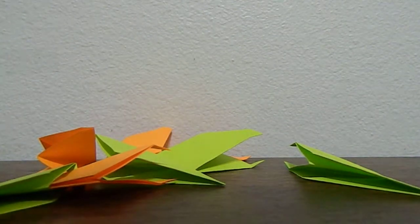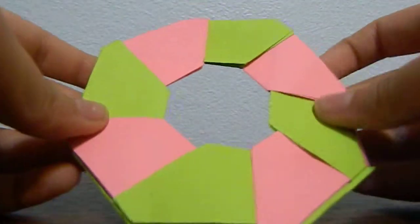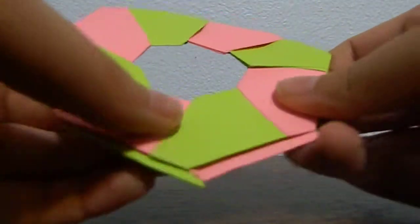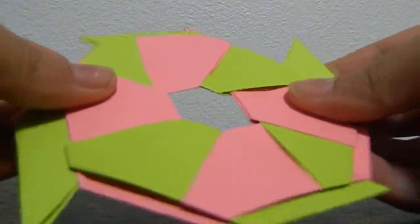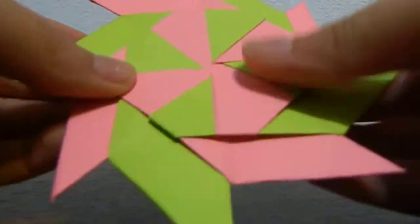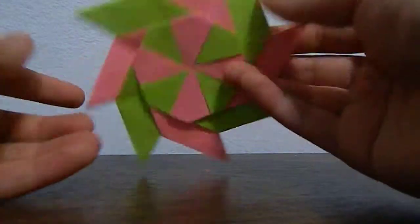When you're done connecting all of your pieces, it should look something like this. You're basically done after you connect all your pieces. You just push it in, push it all in like this, and there you have it, the origami 8-pointed star.